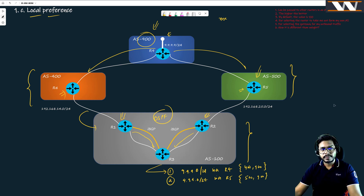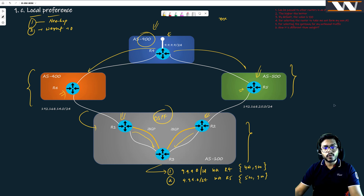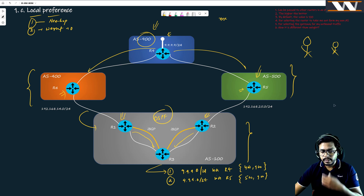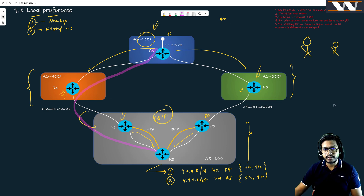How is BGP going to select the best path? First it checks the next-hop attribute — it must be reachable. Then it checks weight; if you are not doing anything, weight is going to be zero. Now Mr. Prasanth Patil is guiding his network engineer: what I want from R3 is that R3 should always go to the best service provider which is R4 towards 9.9.9.0. You might say you will put the weight attribute.